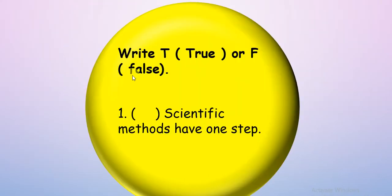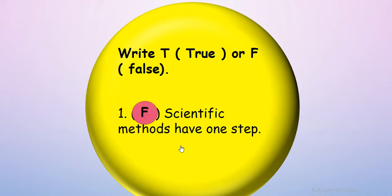Let's try number four — true or false: the scientific method has one step. You think? No! It has more than one — maybe five, six, or even eight steps. So it's false.